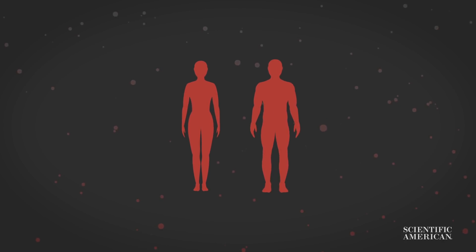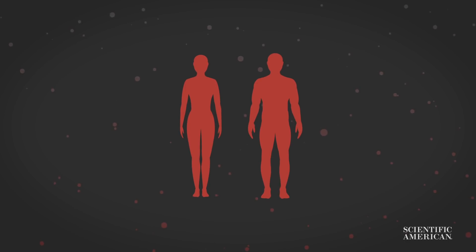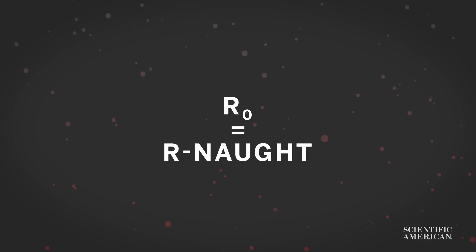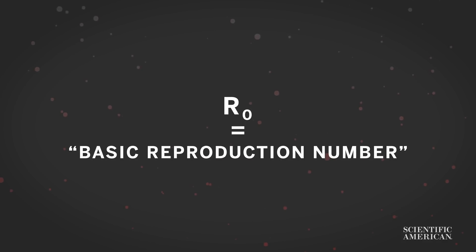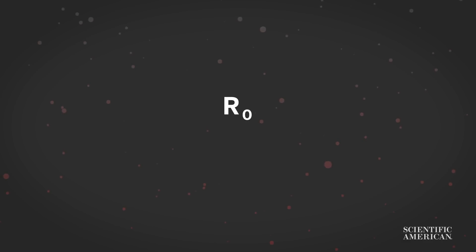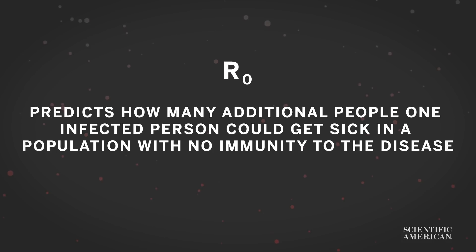During the course of the outbreak, a number that you may never have heard of has shown up again and again. It's called the R-naught, and it's been a critical part of the scientific effort to understand just how transmissible a new virus is. Understanding what it is can tell us some useful things about all disease outbreaks. The R-naught is also known inside epidemiology as the basic reproduction number — a measure of how potentially infectious a disease is. The R-naught predicts how many additional people one infected person could get sick in a population with no immunity to the disease.